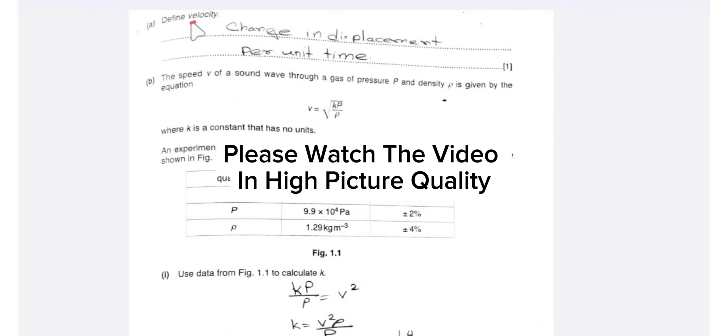Point part A: define velocity. Velocity is change in displacement per unit time.